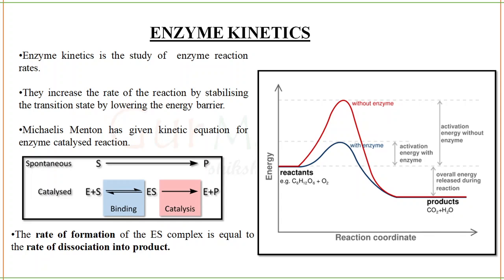The activation energy with the enzyme is much lower compared to the reaction without enzyme. The enzyme has reduced the energy barrier, and with this reduced barrier your product can be formed easily. So what an enzyme does is reduce the energy barrier of the transition state — the intermediate state where the substrate is transitioning into the product.